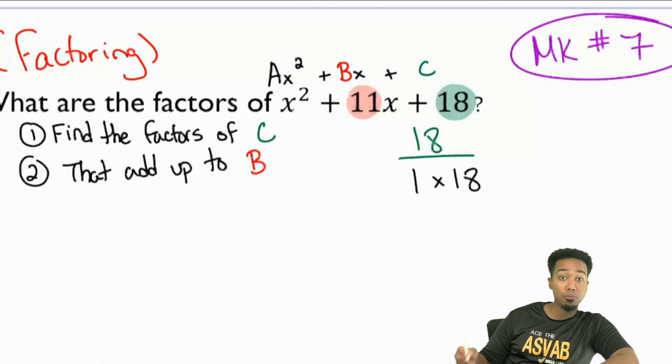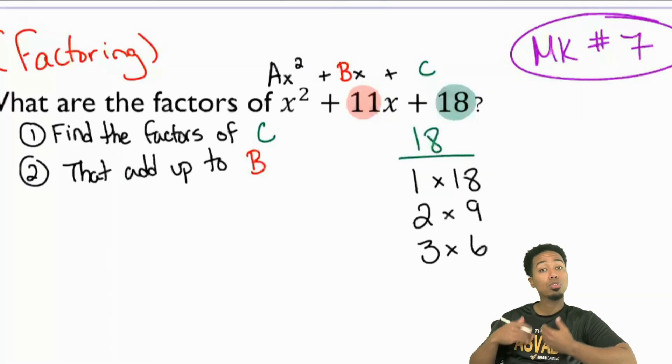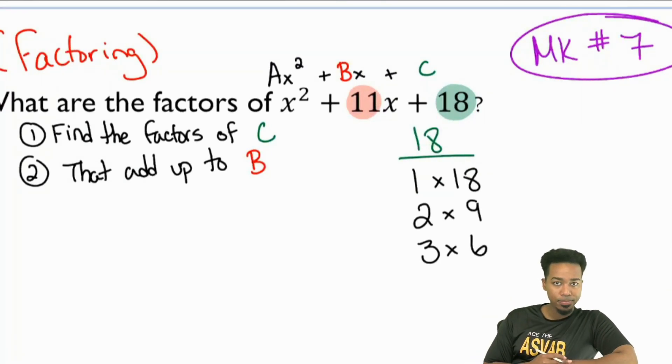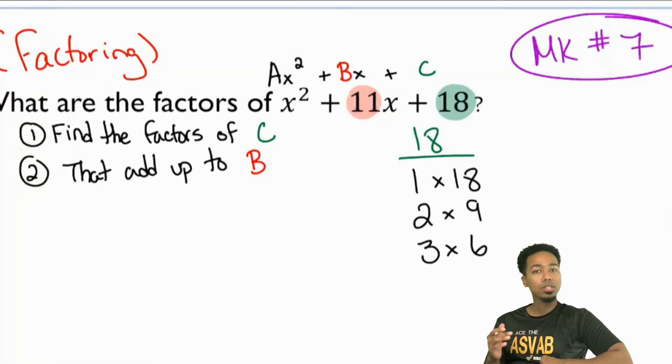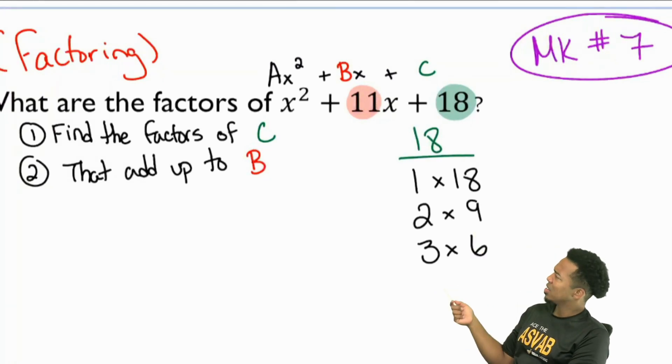We see three and six, nine and two. We're missing one more, the one that's obvious that everyone always overlooks. Yeah, that's gonna be 1 times 18. So those are the factors of 18.